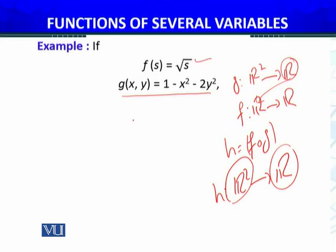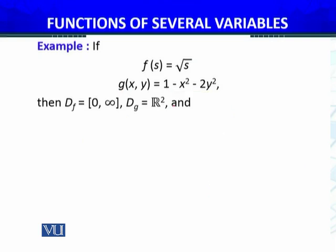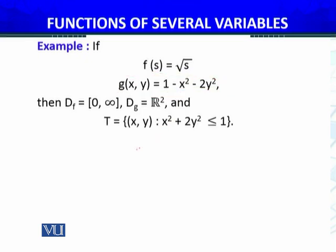This function f(s) is continuous, and its domain is (0, +∞). The domain of g(x, y) is complete ℝ² — we have discussed this on all of ℝ². The common domain T is defined as the set of (x, y) in ℝ² such that x² + 2y² ≤ 1.